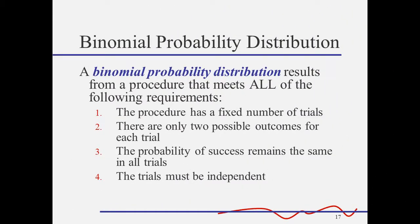A binomial probability distribution is a probability distribution that meets all four of the following requirements. The procedure has a fixed number of trials. There are only two possible outcomes for each trial. This is where we get the name binomial from two outcomes, and we label these as success and failure. The probability of success remains the same in all trials, and the trials must be independent.